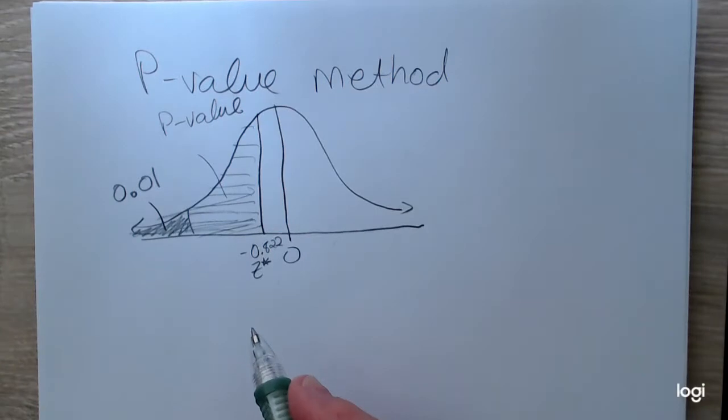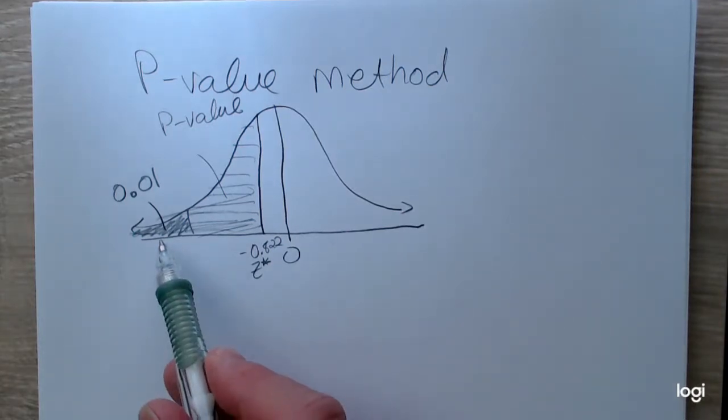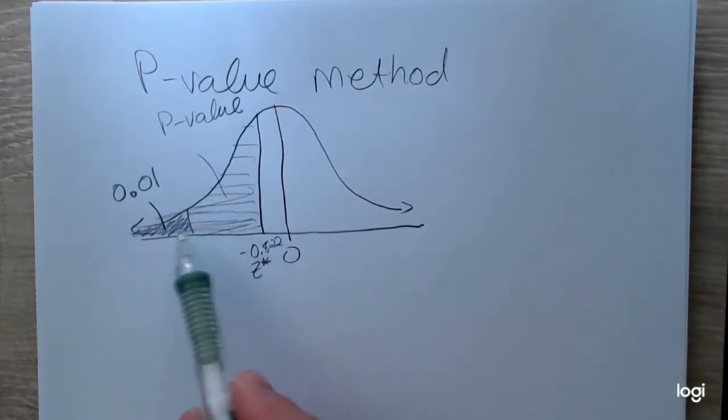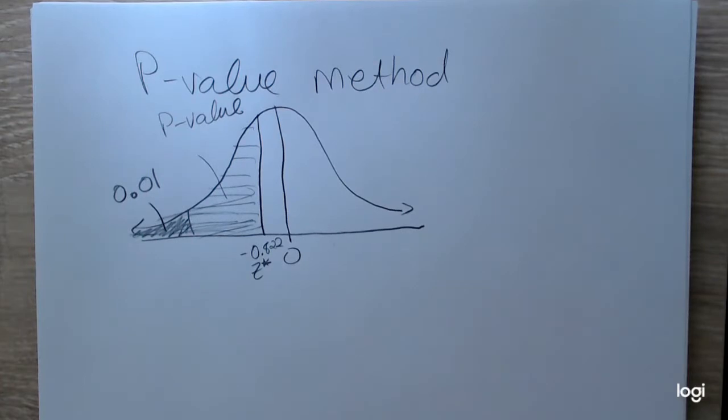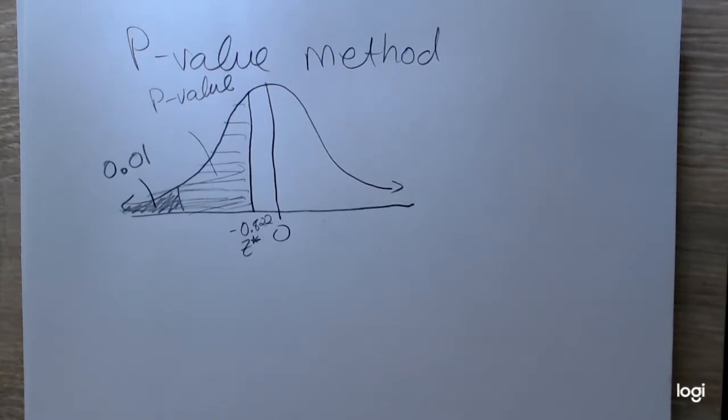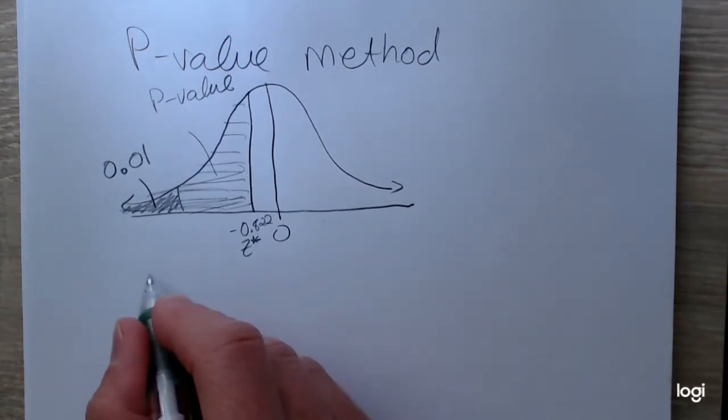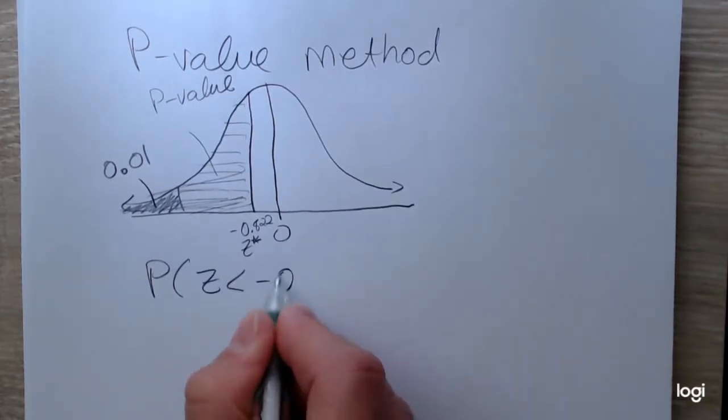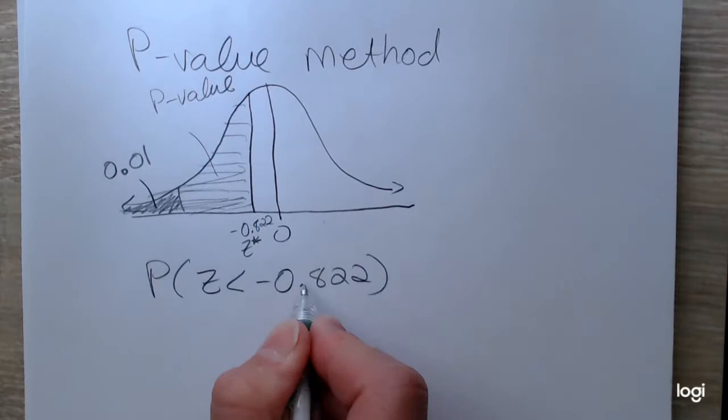When the p-value is greater than or equal to the level of significance, then you fail to reject the null. If the p-value is less than your level of significance, you're going to reject the null. So just by looking at this visually, I know my decision will be to fail to reject the null because that p-value is clearly greater than the level of significance. But I can find that p-value using the normal CDF function in the calculator. In notation, it's the probability that I get a Z-score less than negative 0.822. Okay, now this is rounded.